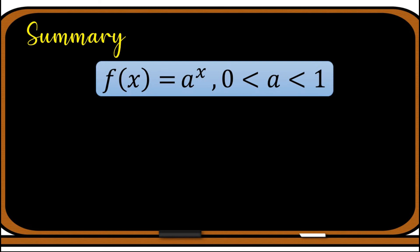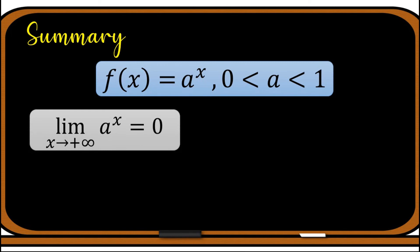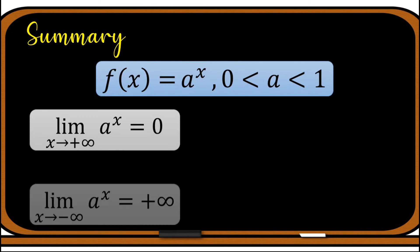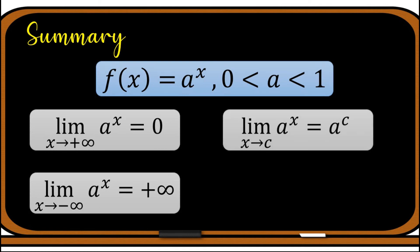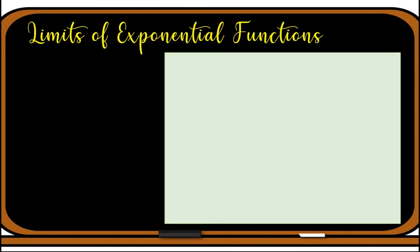To summarize the limits of f(x) = a^x where a is between zero and one: the limit of a^x as x approaches positive infinity equals zero; the limit of a^x as x approaches negative infinity equals positive infinity; and the limit of a^x as x approaches a constant c equals a^c, where c is in the domain of the function.